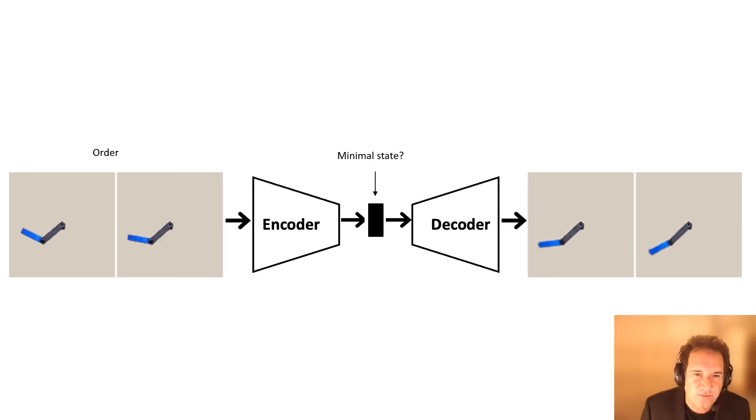But now the question is, can we extract what the variables are from the big AI system that is doing the prediction? Let's start with just figuring out how many variables are needed to describe this double pendulum. We know the answer is four, but let's see if the AI system can figure that on its own.